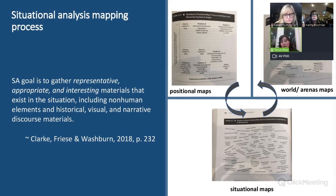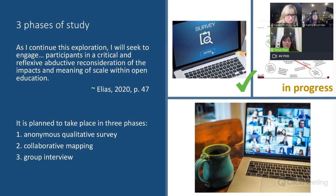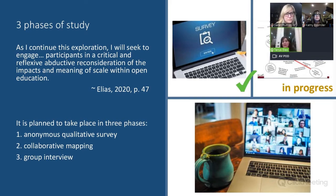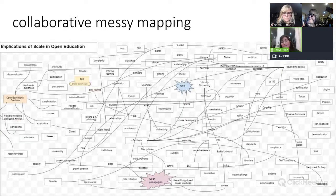My research approach is situational analysis. It involves these maps — a messy situational map, and then creating positional and social worlds/arena maps going forward. The idea is that it pulls from all sorts of different things, looking for data that is representative, appropriate, and interesting. My study has three phases: it started with an anonymous qualitative survey — now complete — with 20 responses and open-ended questions that yielded big chunks of text. From there I put it into a map, followed by a collaborative mapping exercise, and then a group interview to close off the work.